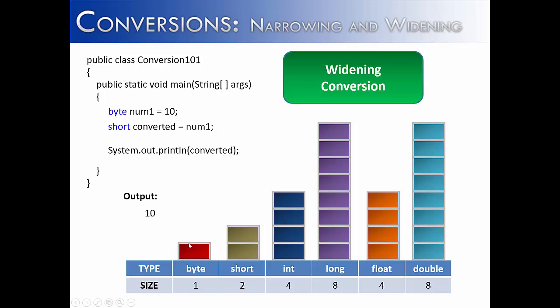which is one byte of data, and I'm moving it into a data type that can store two bytes, which is a short. The byte easily fits within the short. Nothing special has to happen when you're making a widening conversion from a smaller data type into a bigger data type.